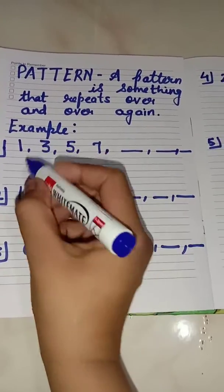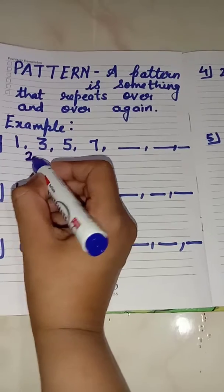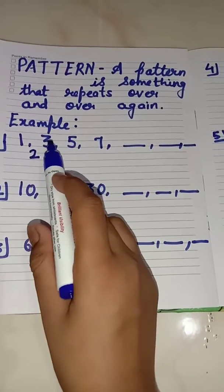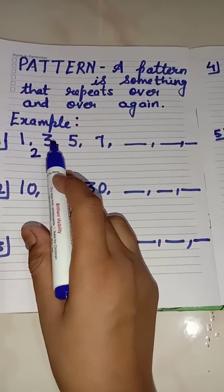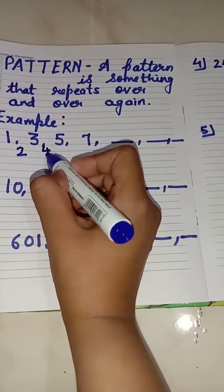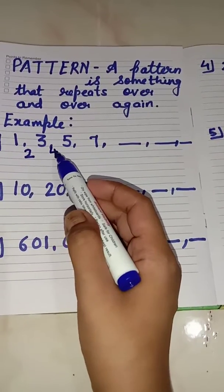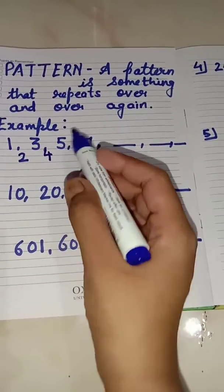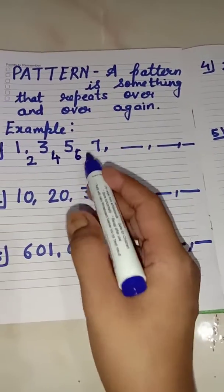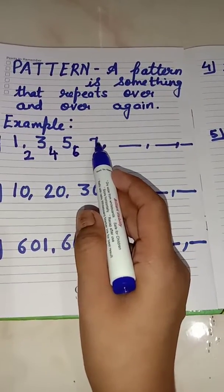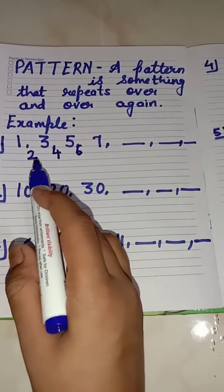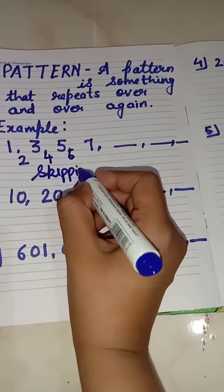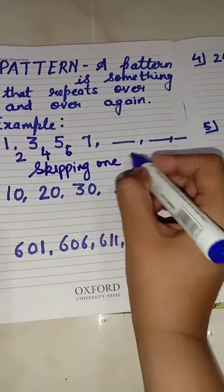After 1 comes 2, but we have not written 2 here. So it means we have skipped 2, then we have written 3. What comes after 3? 4. But we have not written 4 here. So we have skipped again one number, then we have written 5. After 5 comes 6, but again we have not written 6. We have written 7. So students, we are skipping one number.